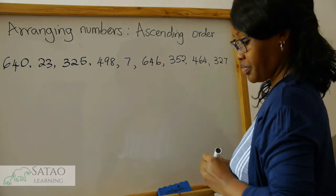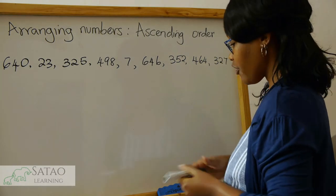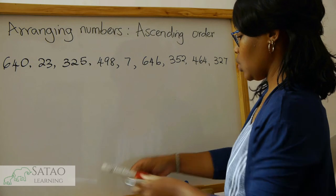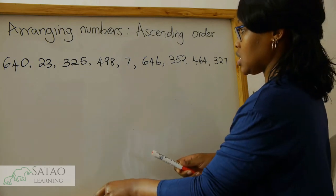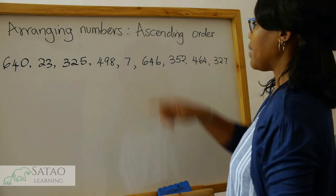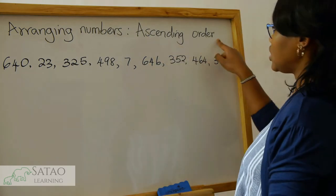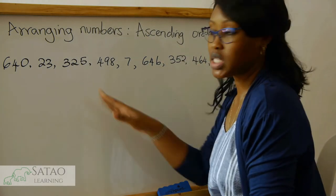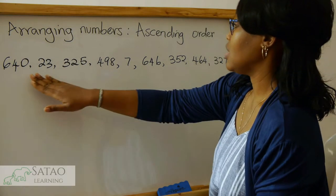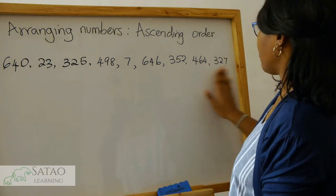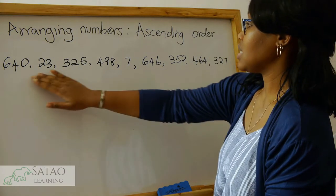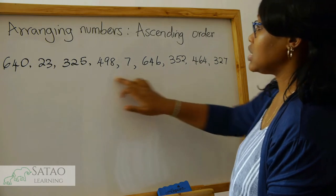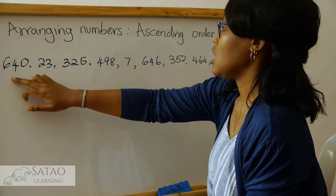The first thing we do when we look at the numbers — remember, ascending order means we start with the smallest number. So when we look at the numbers, first we begin by asking ourselves: is there any one-digit number?